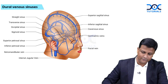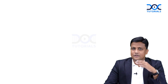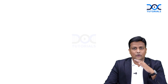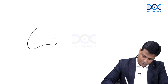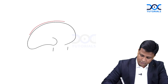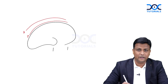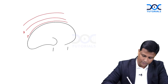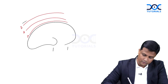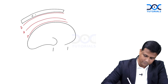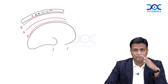Let's start from scratch. Our brain is covered by three meninges. The innermost one is the pia mater, then the arachnoid mater, and then the outermost is the dura mater. Outside the dura mater you find the cranial bones, the cranium. So the arrangement is: pia mater, arachnoid mater, dura mater, and then the cranium.